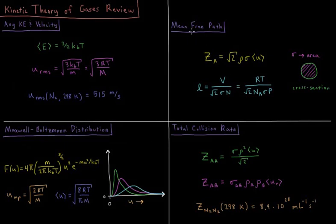We can compute the mean free path, which is the average distance a gas particle travels between collisions with another gas particle. The collision rate of an individual particle ZA is equal to the square root of 2 times its density sigma times its cross-sectional area times its average velocity.